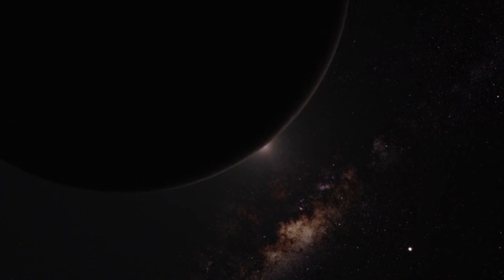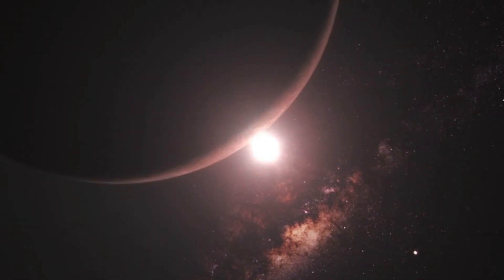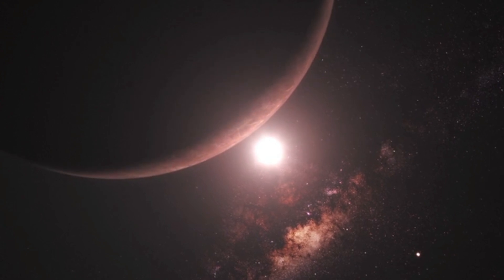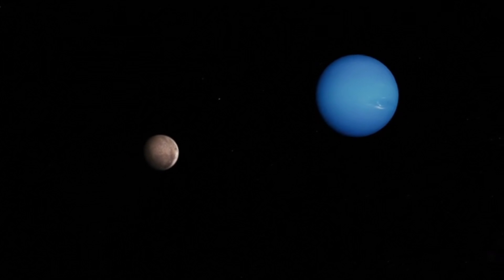These exoplanets are a tapestry of diversity, each possessing distinct compositions and histories. The term Earth-like, or Neptune-like, merely indicates similarities in mass and radius, not exact replicas.